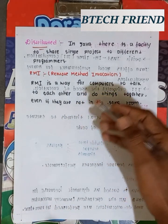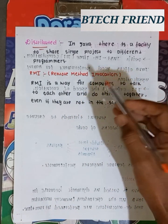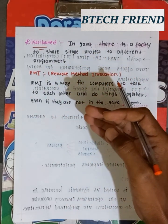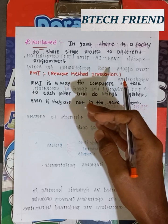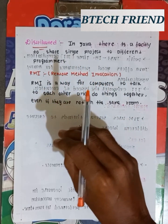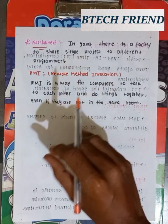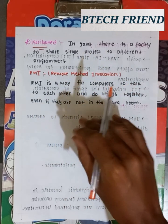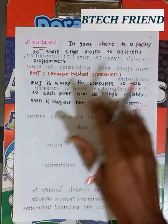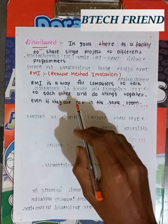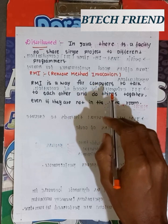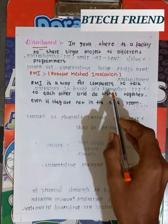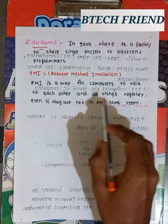The next feature is distributed. In Java, there is a facility to share a single project with different programs and distribute it. If you want to do a project and share it with different programs, this property is called distributed.